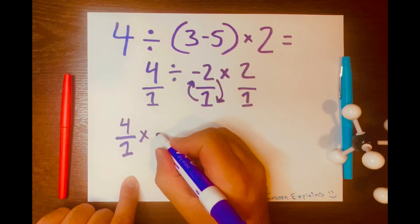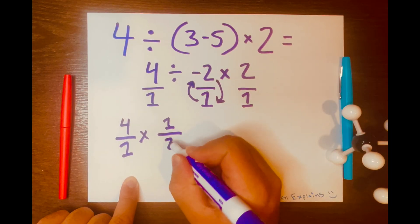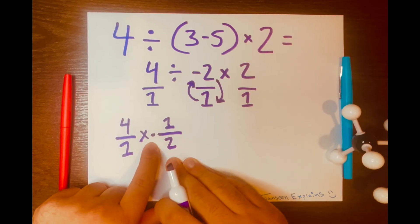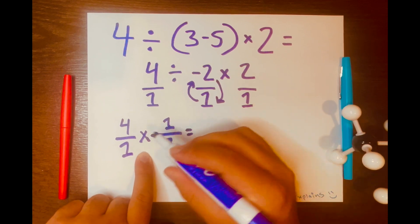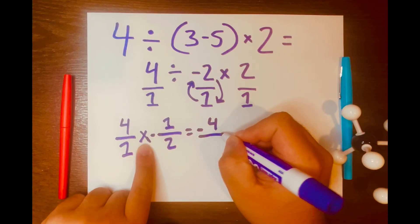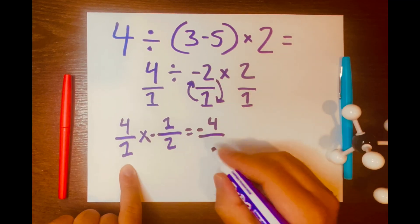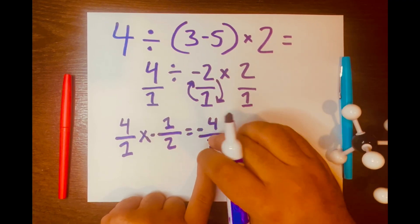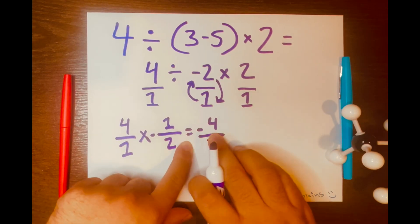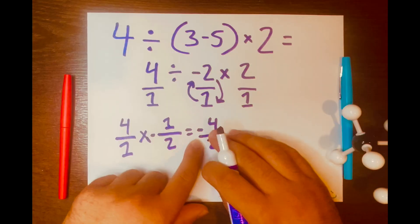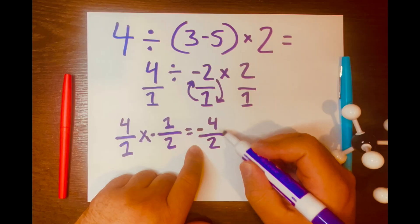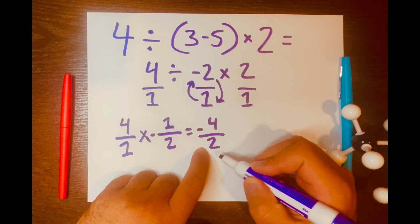And now we write it like this: negative 1 over 2. Don't forget the negative sign. Then we multiply: 4 times negative 1 is negative 4, over 1 times 2 is 2. You can write the negative symbol right next to the fraction line, but it's also fine to write it next to the 4. Now we cannot leave this as negative 4 over 2 — it needs to be simplified.